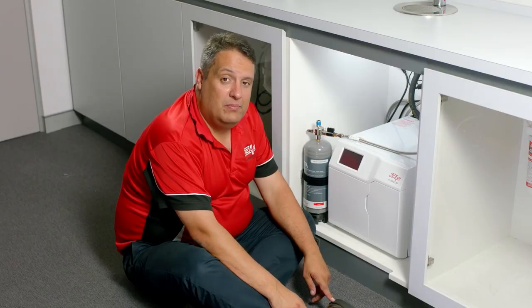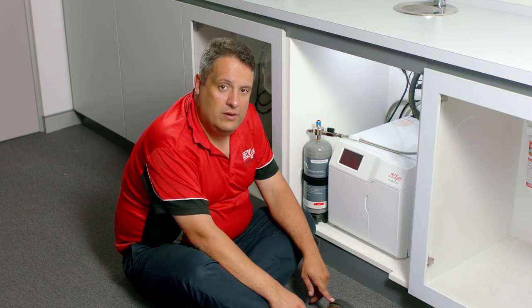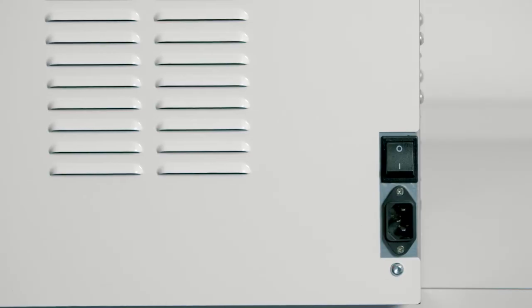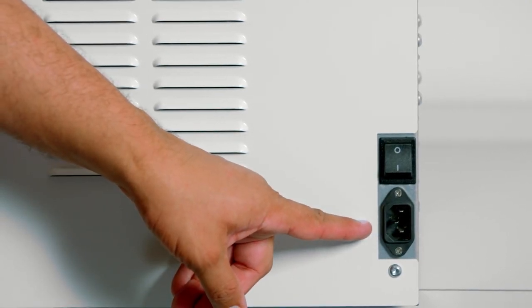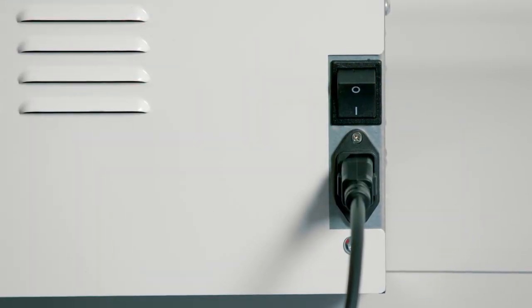Next step, plug the power in, turn the water on and we'll start calibration. For newer models of the HydroTap, they come with an IEC electrical connection which is found on the right hand side of the unit. Plug the cable in and turn the switch on.